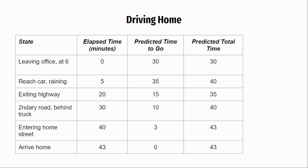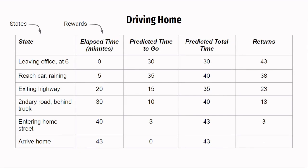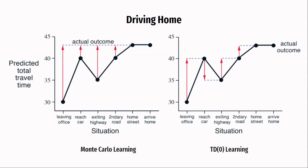How do we model this as a reinforcement learning problem? Your states are the locations along the route. The rewards are the elapsed times — for example, the reward at reaching the car is 5, and at exiting the highway is 15 (which is 20 minus 5). Since the rewards are elapsed times, the actual return is the actual time to reach home from that state. The value of each state is the predicted time to go, since it calculates the amount of reward that can be collected. We keep the discount factor and alpha as 1 for simplicity. When you run Monte Carlo and TD methods, in the Monte Carlo case the values for all states are updated to the actual outcome, whereas for TD methods the values are updated based on the next estimates.